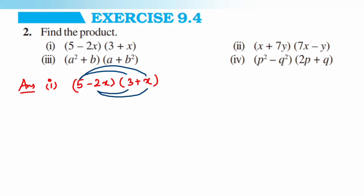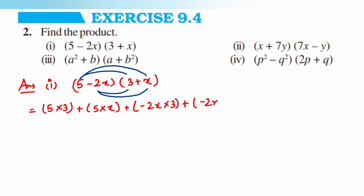So here: 5 multiplied by 3, plus 5 multiplied by x, then minus 2x multiplied by 3, and plus minus 2x multiplied by x. This is equal to 15 plus 5x, then minus 2x times 3 gives minus 6x, and minus 2x times x gives minus 2x squared.